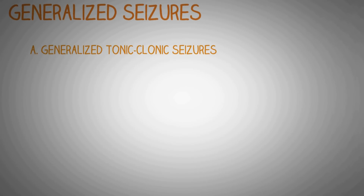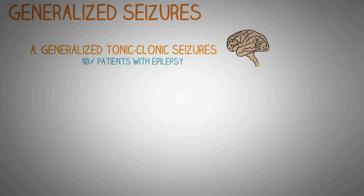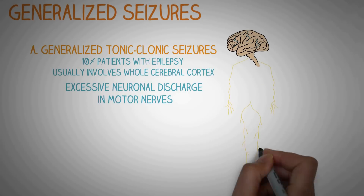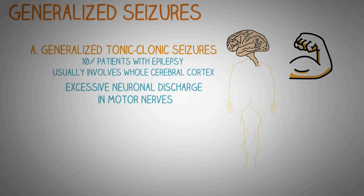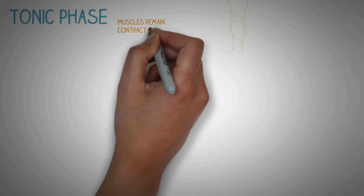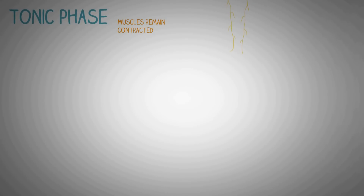Now let's talk about generalized seizures in more detail. One of the most common types of generalized seizures is the generalized tonic-clonic seizure. In generalized tonic-clonic seizures, there is widespread and uncontrolled neuronal activity in the whole cerebral cortex, and they happen in almost 10% of patients with epilepsy. There is excessive neuronal discharge in the motor nerves through the brain, causing the muscles of the body to contract without any relaxation. This is called the tonic phase, in which the muscles remain totally contracted.